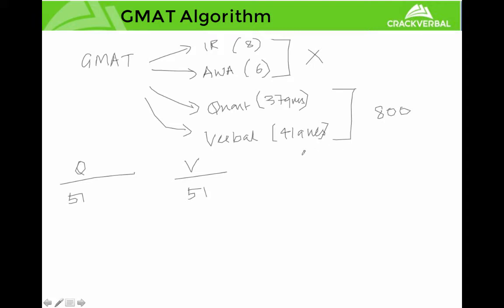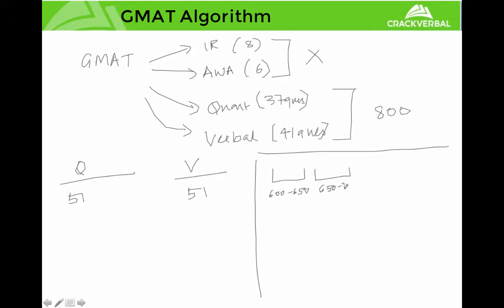The logic is fairly simple. I'll explain the adaptive algorithm in an easy, crude way. GMAT has various buckets — for example, a bucket from 600 to 650, another from 650 to 700, another from 700 to 750, and the last one from 750 to 800. For convenience I'm using those ranges; in reality it might be 700 to 740, 750 to 800, and so on.